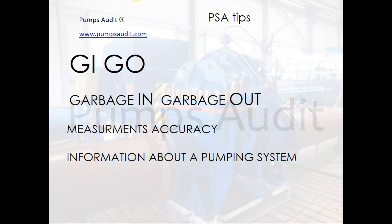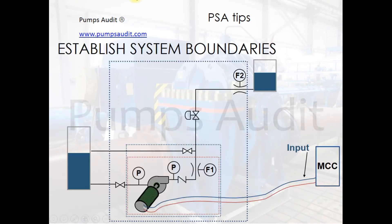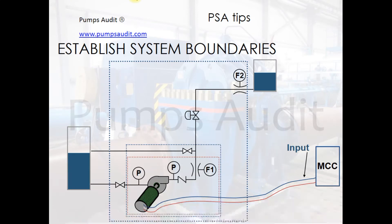Further, we will consider some recommendations which can be very useful for pumping system assessment. It is very important to establish system boundaries correctly, because the system approach is the most powerful method of increasing pumping system efficiency — when we concentrate not only on the pump or the electric motor, but can see the whole system including piping,